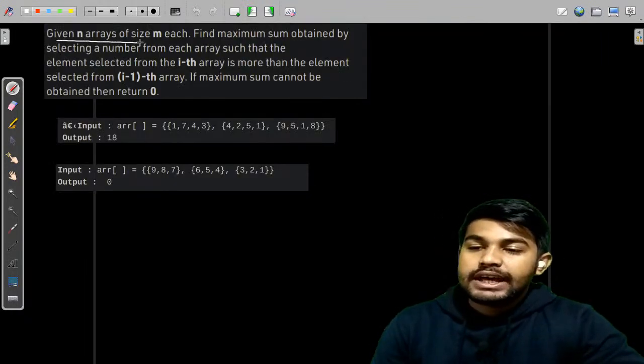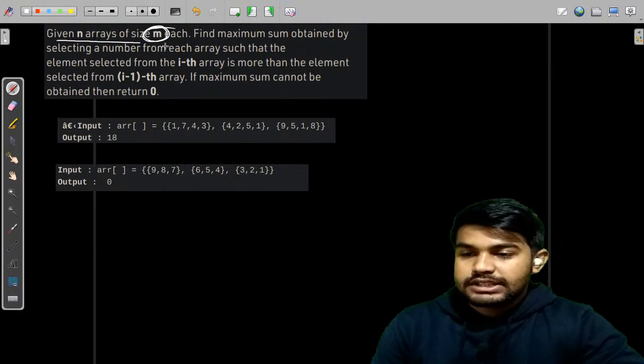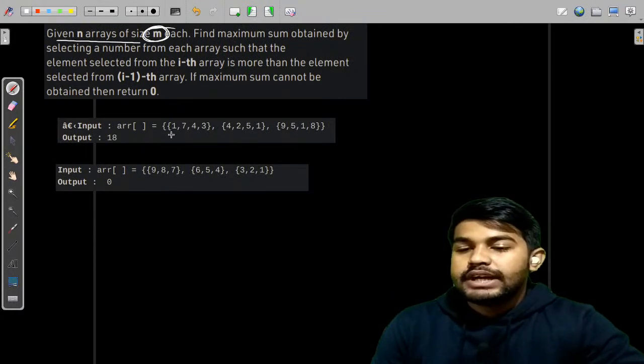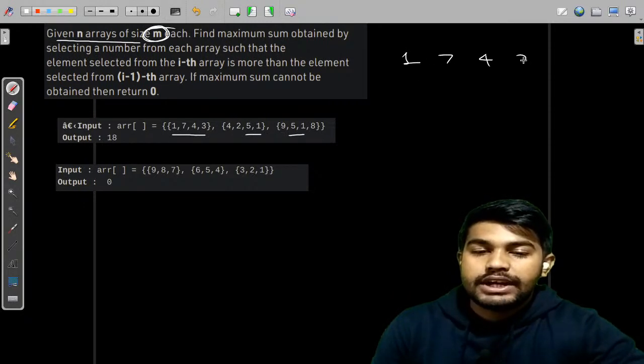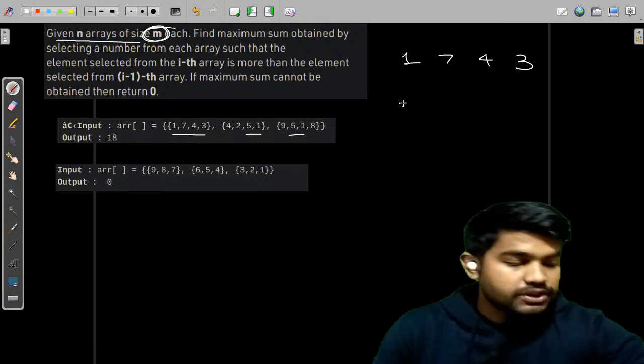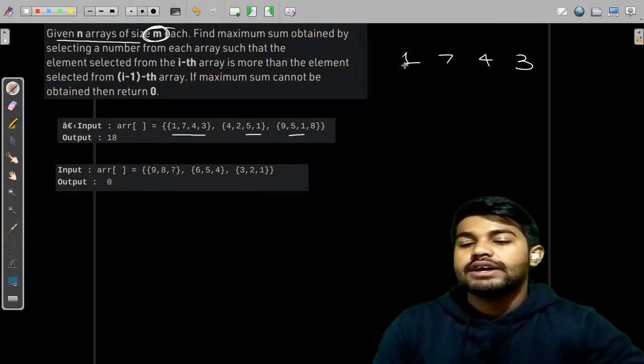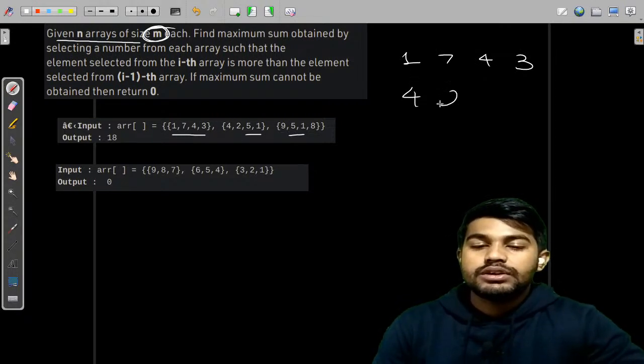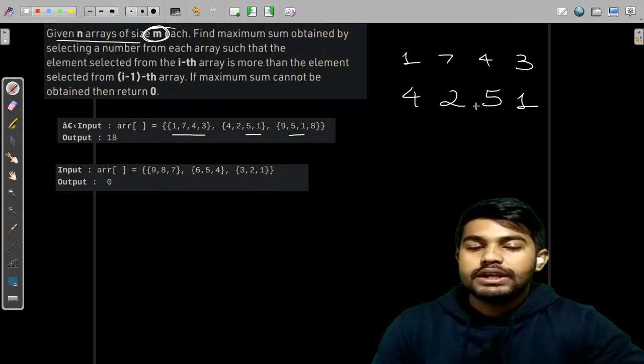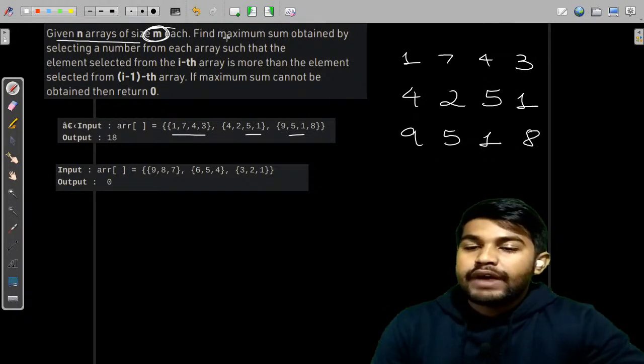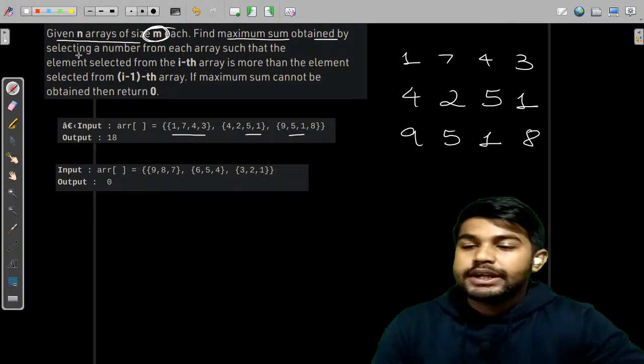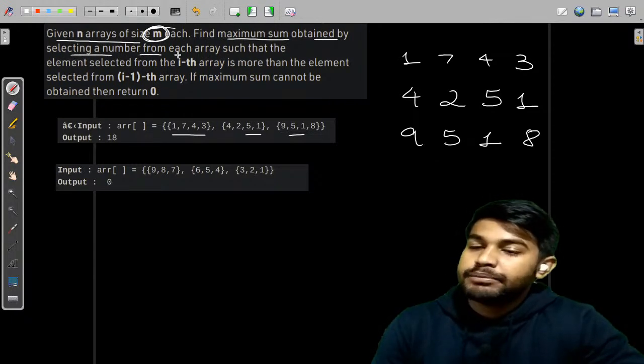Now let us move to the problem statement. We are given n arrays of m size each. Suppose we are given the first array 1, 7, 4 and 3. The first array is of size 4. Then we have 4, 2, 5, 1. This is also of size 4. Then we have 9, 5, 1 and 8. This is also of size 4.